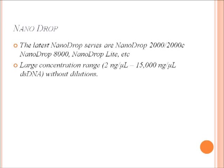Nanodrop is an instrument which can be used for assessing the purity and quantity of nucleic acid preparations. There are various different versions of Nanodrops available. The Nanodrop series includes Nanodrop 2000, 2000C, 8000, Nanodrop Light, etc. The advantage of using Nanodrop is that a large concentration range can be used for analysis, from 2.2 nanograms per microliter to 250,000 nanograms per microliter. Double-stranded DNA without dilution can be used for analysis using Nanodrop.